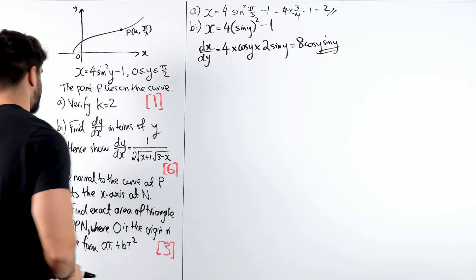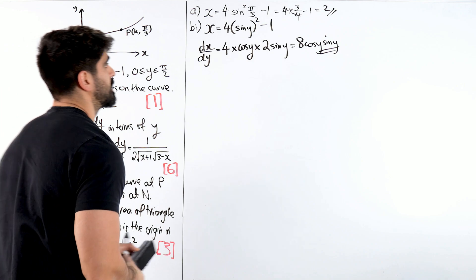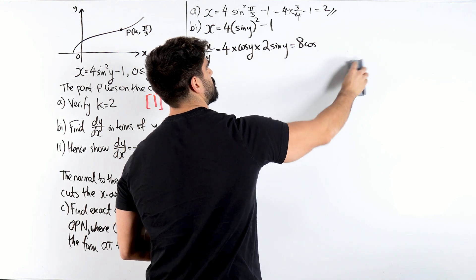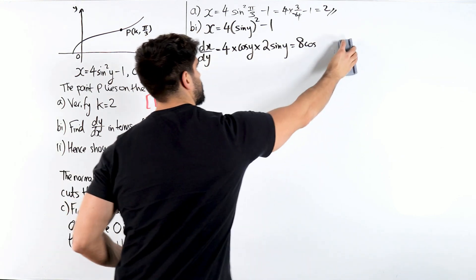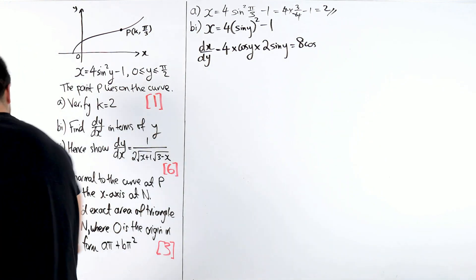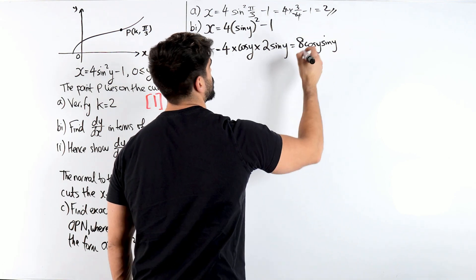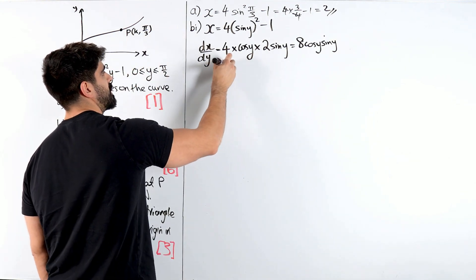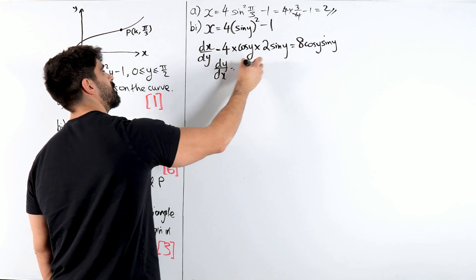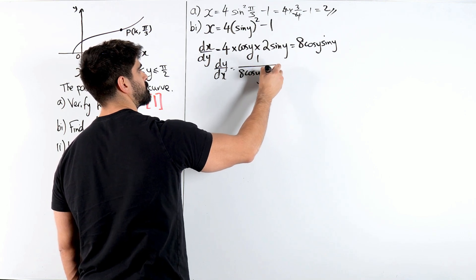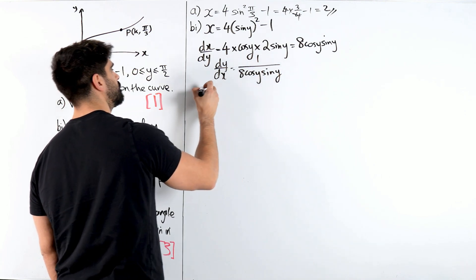Oh, we want dy by dx, my bad. Let's be careful with that, we have to actually do 1 over all of that stuff. Usually they do dx dy. I guess exams are trying to be cheeky here. So you have dy dx. They're always trying to get you to lose that one mark.